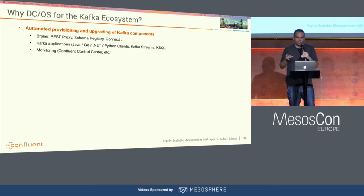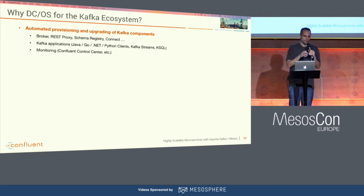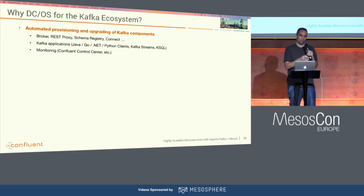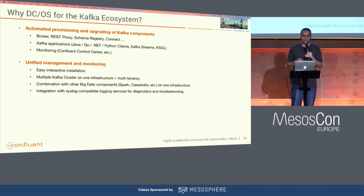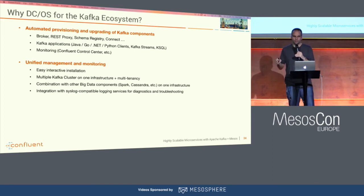Here we see how Kafka and DCOS combine: with Marathon or Kubernetes as frameworks, Kafka brokers on top and Kafka Streams instances on the bottom, independently scaling up and down. There are three key benefits when customers combine Kafka and DCOS. First: DCOS allows automated provisioning and upgrading of all Kafka components — brokers, consumers, producers, Kafka Streams, Kafka Connect, and all Confluent enterprise components can all run on DCOS. Second: unified management and monitoring. You can manage multiple Kafka clusters on one infrastructure including multi-tenancy — a huge benefit compared to just using AWS, for example.